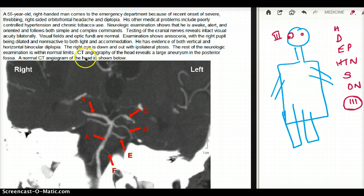The thing is, on the CT angiography of the head, it reveals a large aneurysm in the posterior fossa. And the only problem we have with this patient is his right eye with cranial nerve 3, which is giving him diplopia and ptosis. And we also know that there is a large aneurysm in the posterior fossa.